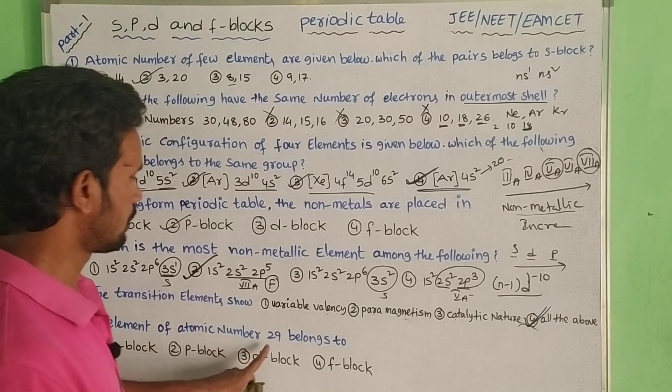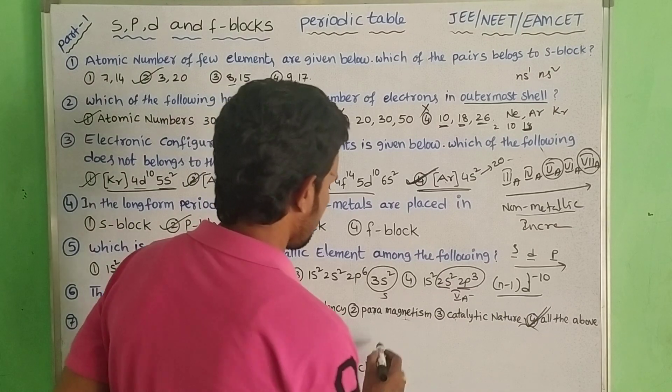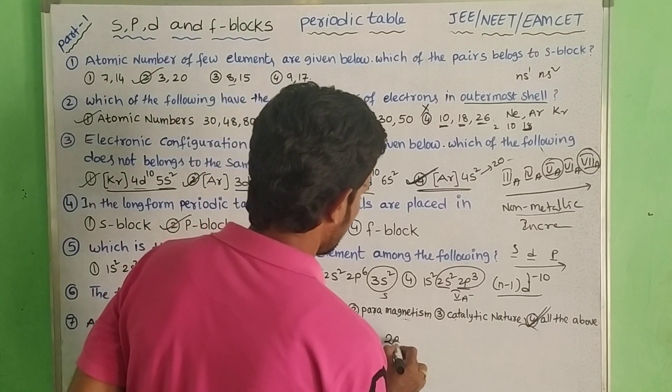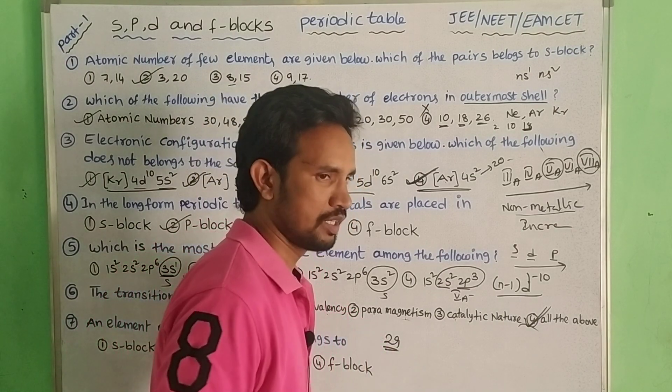An element of atomic number 29 belongs to which block? Atomic number 29 is Copper. Its electronic configuration is [Ar] 3d10 4s1, so it belongs to the D-block.